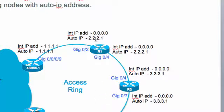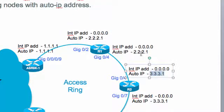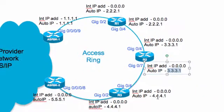On the remaining nodes, only the auto IP address has been configured using the 'auto IP ring' command. The interface IP address is null because it will be assigned by the Auto IP implementation. So on all non-seed nodes in the ring, only auto IP is configured before the process kicks in.